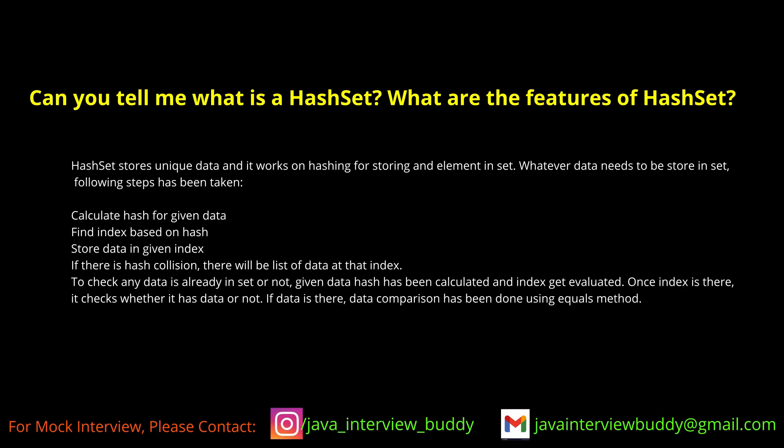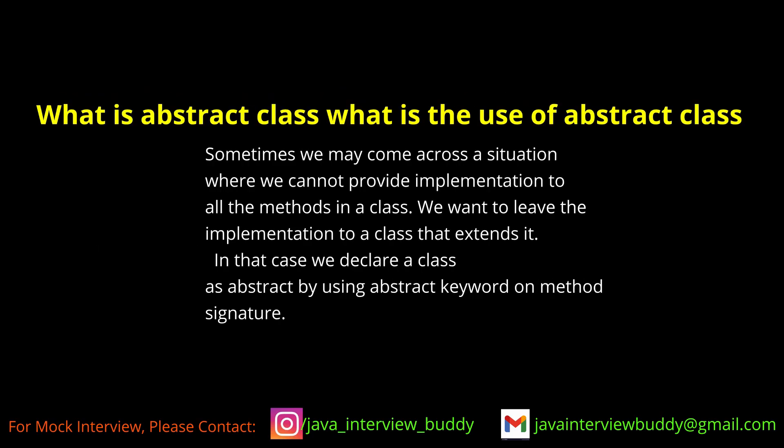HashSet features: you cannot add duplicate data, the order is not maintained (it is unordered), and it uses hash codes to map data to buckets internally. Regarding null values — the speaker was unsure whether null is allowed in HashSet.